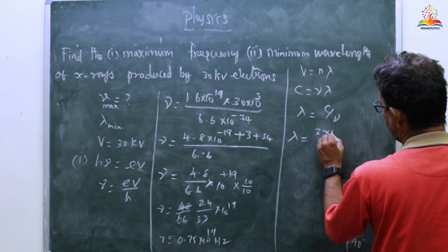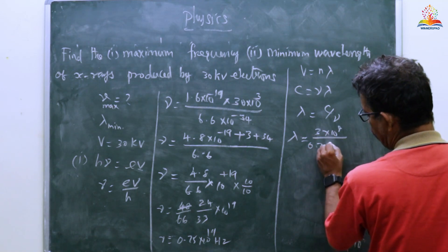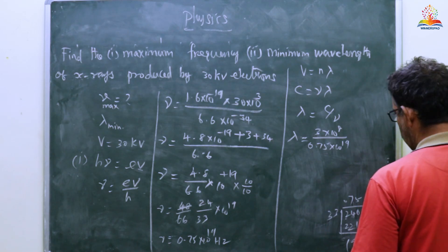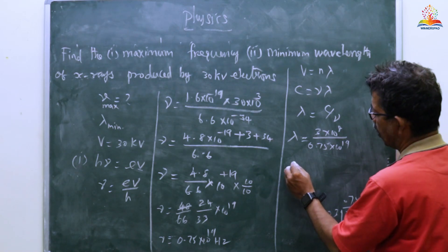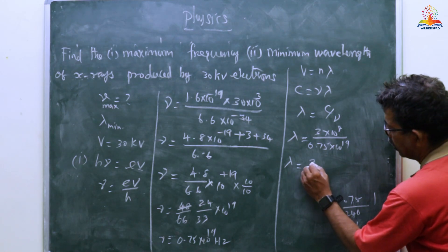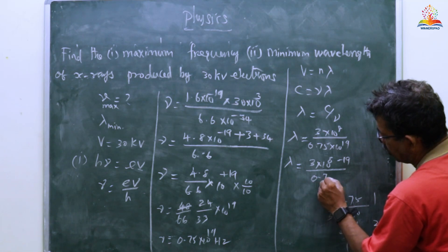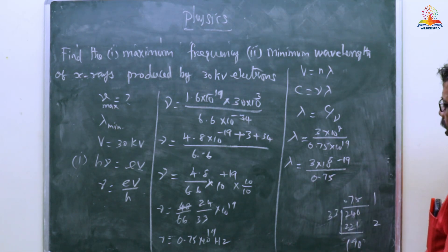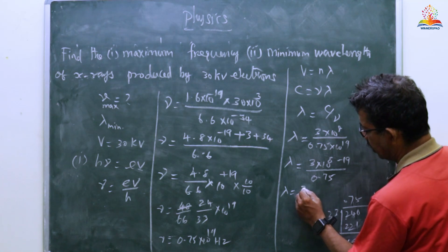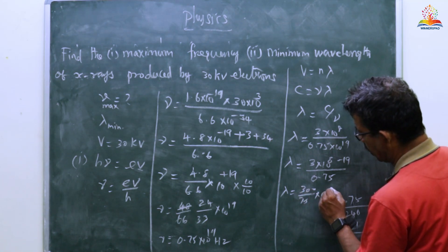λ equals C by ν, which is 3 times 10 to the 8 divided by 0.75 times 10 to the 19. λ equals 3 times 10 to the 8 minus 19 divided by 0.75.